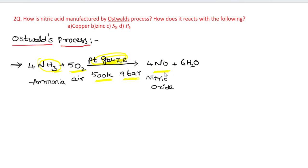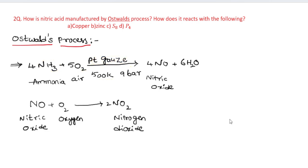The equation is: 4NH₃ + 5O₂ → 4NO + 6H₂O. This is the first step, and the product formed is nitric oxide.